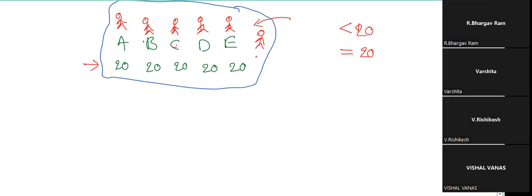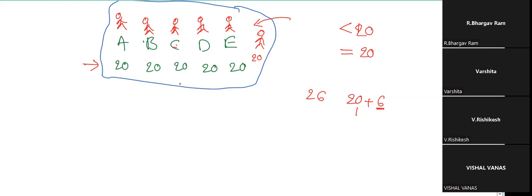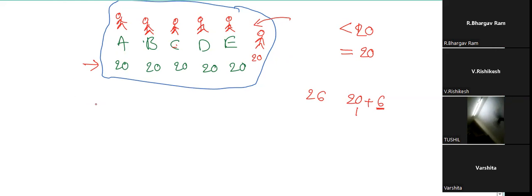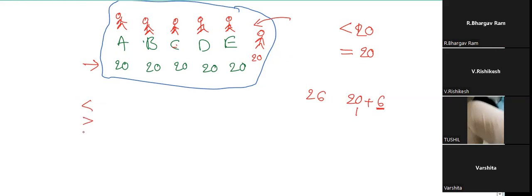So I am bringing 20 rupees for myself and distributing 6 extra rupees among all of us. Including me, how many persons are there? Six. Five persons already plus me — six members. I have 26 rupees: 20 is for myself as an entry pass, and the extra 6 rupees are distributed among all six members. So the average becomes 21. When a new person enters the group, the average may be reduced, increased, or equal.